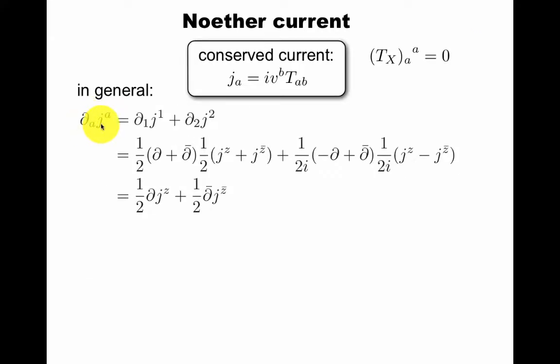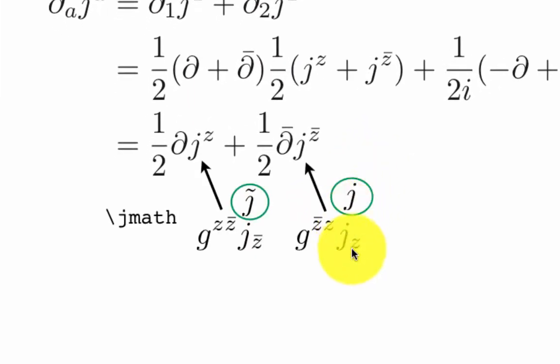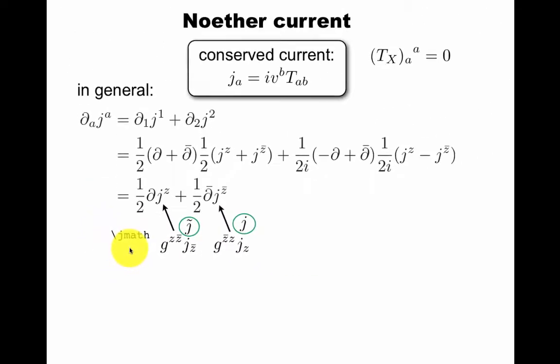In general, the conservation of the current j can be written in terms of components. We can write that in complex coordinates, as I discussed in the other video. Usually the j's are written with index down. So j z down is j tilde, because you only have this off diagonal z bar z.